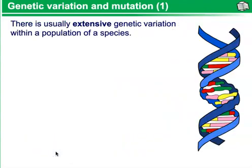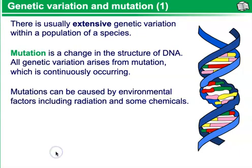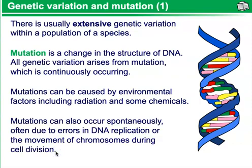Genetic variation and mutation. There is usually extensive genetic variation within a population of a species. Mutation is a change in the structure of DNA. All genetic variation arises from mutation, which is continuously occurring. Mutations can be caused by environmental factors, including radiation and some chemicals. Mutations can also occur spontaneously, often due to errors in DNA replication or the movement of chromosomes during cell division.